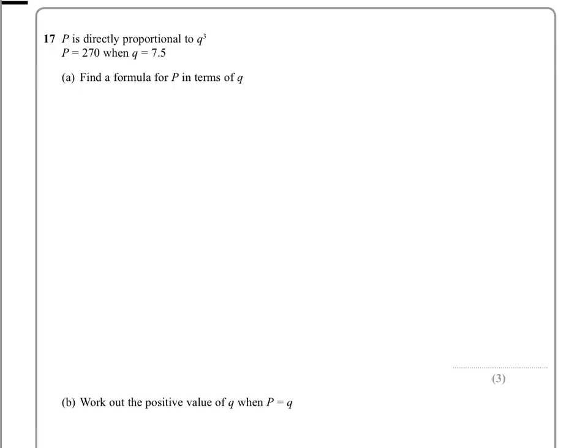In question 17 we're told that P is directly proportional to Q cubed, and we're asked to find a formula for P in terms of Q. So we know that P is proportional to Q cubed, but we need to know to what ratio, so we introduce this variable K, making P = kQ³.